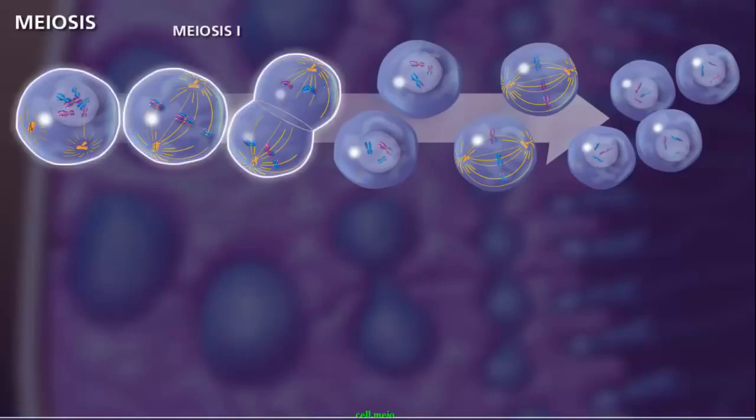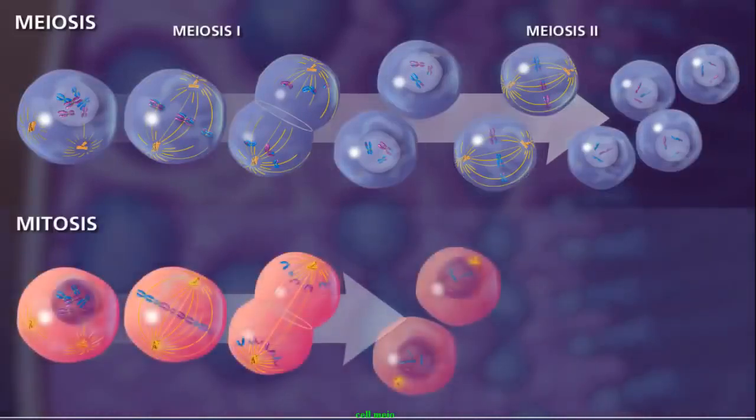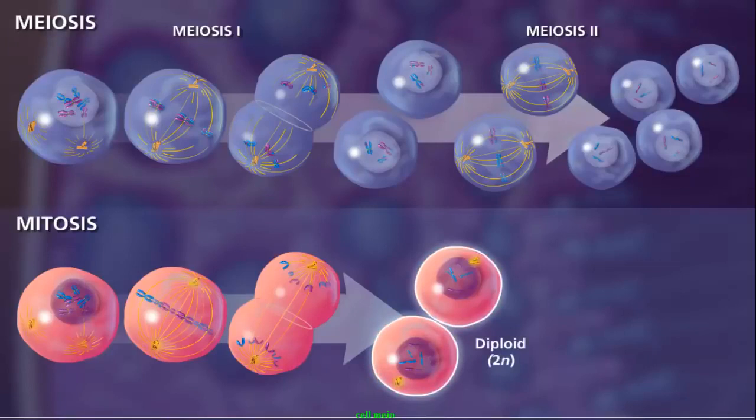These divisions are termed meiosis I and meiosis II. Although the processes of mitosis and meiosis look similar, there are a few major differences. One obvious difference is that mitosis results in two diploid daughter cells, and meiosis results in four haploid cells.